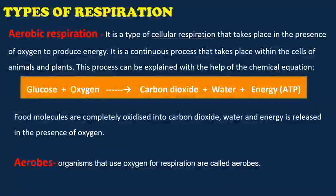Aerobic respiration is a type of cellular respiration that takes place in the presence of oxygen to produce energy. It is a continuous process that takes place within the cells of animals and plants. This process can be explained with the help of a chemical equation: glucose combines with inhaled oxygen, breaking down glucose into carbon dioxide and water, and releases energy. Food molecules are completely oxidized into carbon dioxide and water, and energy is released in the presence of oxygen. Organisms that use oxygen for respiration are called aerobes.